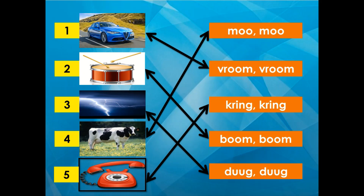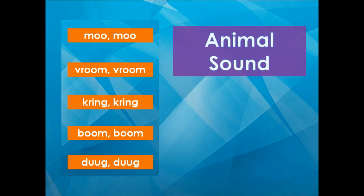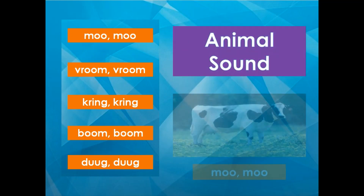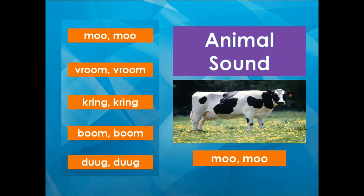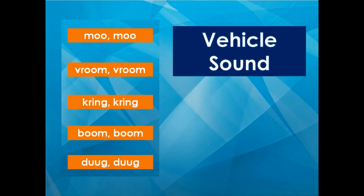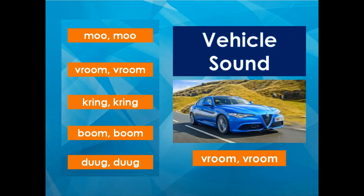Great job kids! Now, let me ask you these questions. Which of the following is an animal sound? That's correct! It's the cow sound — moo! Which of the following is a vehicle sound? That's correct! It's the car sound — vroom!